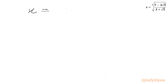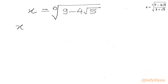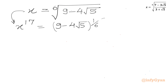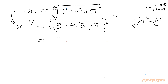So x is the 6th root of 9 minus 4√5. Now what we have to find is x power 17. Let us plug in the value of x, so I will write (9 minus 4√5) whole power 1/6, and then raise to the power 17. Using the property (a^b)^c = a^(bc), we multiply both powers to get (9 minus 4√5) whole power 17/6.